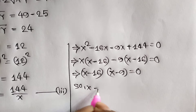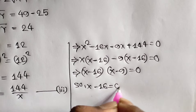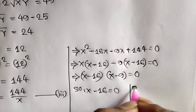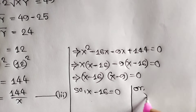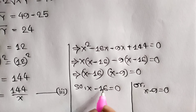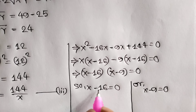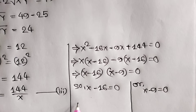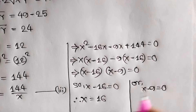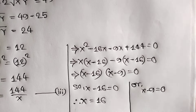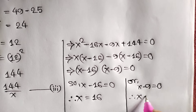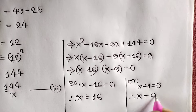So x − 16 = 0 or x − 9 = 0, which gives x = 16 or x = 9.